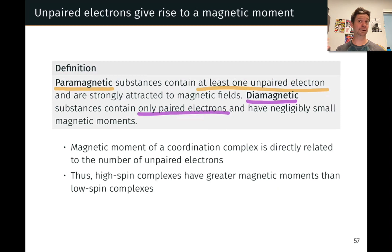Now, how strongly magnetic a particular complex or compound is depends on the number of unpaired electrons within it, since the more unpaired electrons we have, the larger the net magnetic moment.